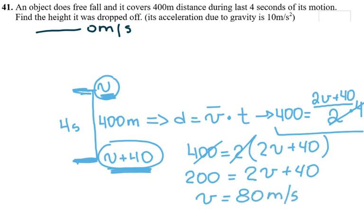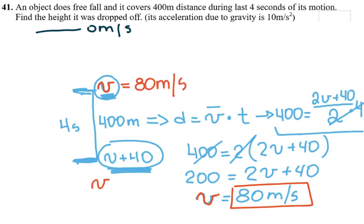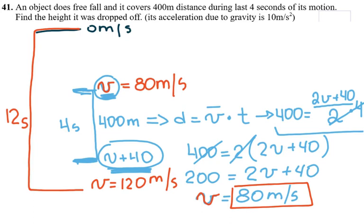So if this is 80 meters per second, then this velocity is 120 meters per second. Then I know that it has been falling down for 12 seconds to get to the velocity of 120 meters per second, because if it starts from 0, it adds each second 10, 10, 10, because acceleration is 10. So the final velocity is going to be 120 only in 12 seconds.